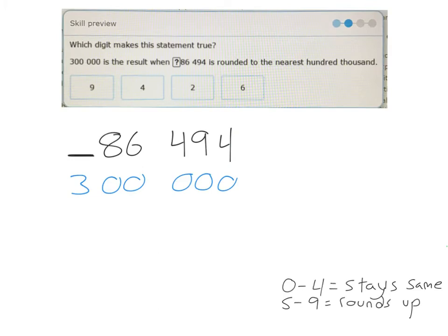So this example says, which digit makes the statement true? 300,000 is the result when this number is rounded to the nearest 100,000. So here's our 100,000 column. If we're going to round this number and it ends up rounding to 300,000, what would this have been before?